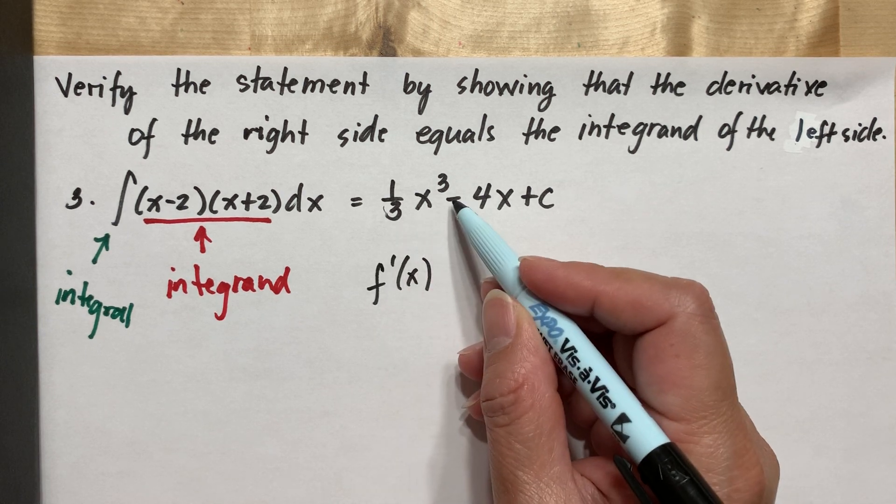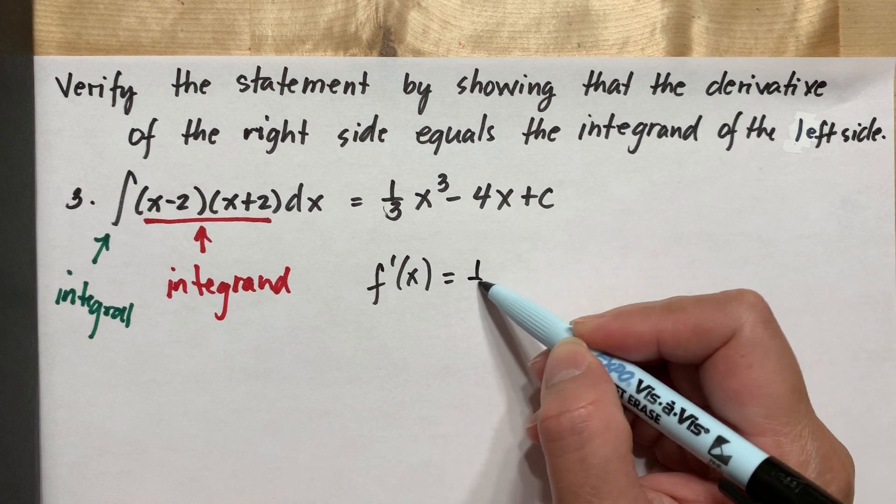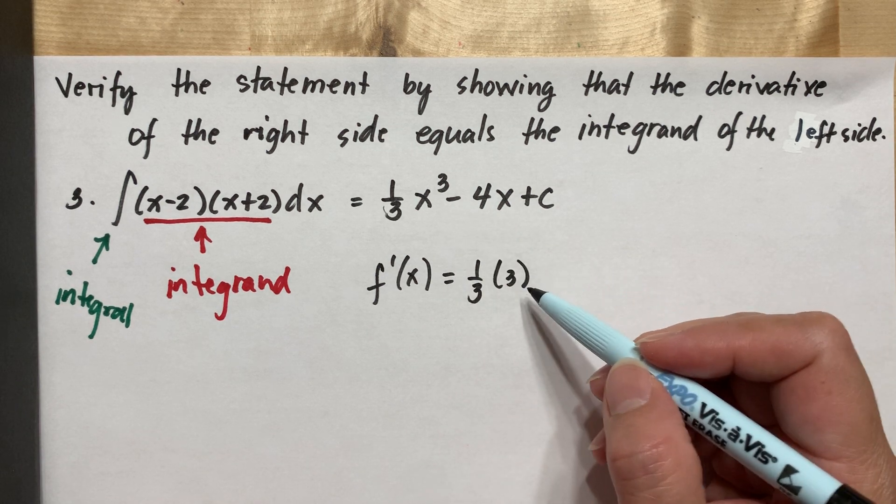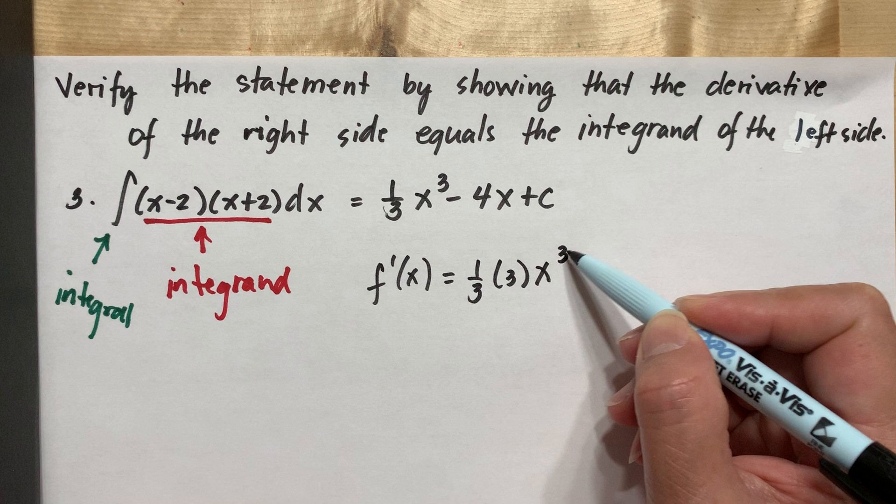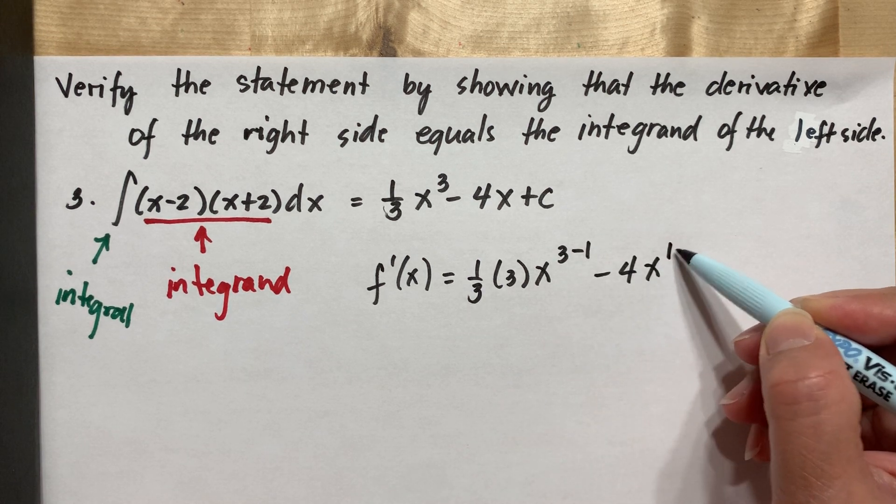One-third x to the third minus 4x plus c. So this will be one-third. Then to get the derivative of this, the exponent will be multiplied, x to the three minus one, minus 4x to the one minus one.